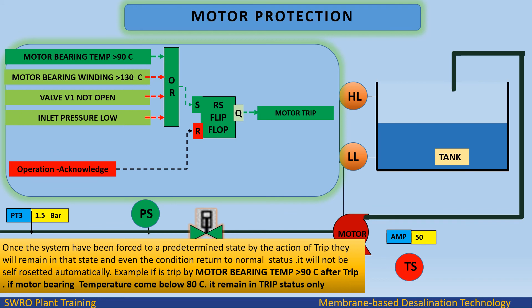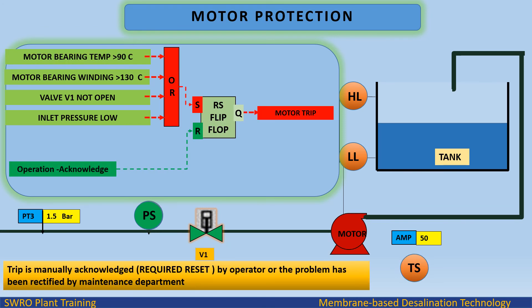For example, if a trip is caused by motor bearing temperature greater than 90 degrees, and after the trip the bearing temperature comes below 80 degrees, the system remains in trip status. The trip must be manually acknowledged and reset by the operator, or the problem must be rectified by the maintenance department.